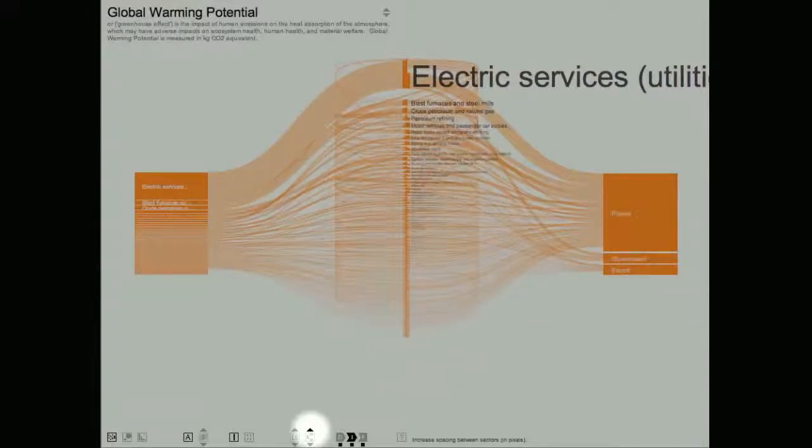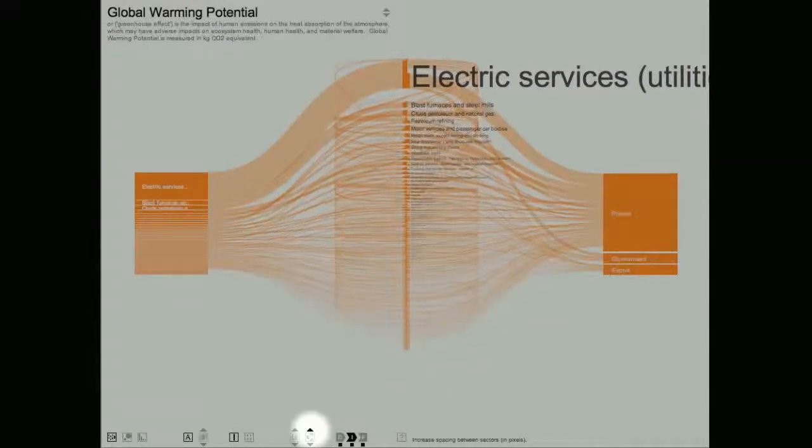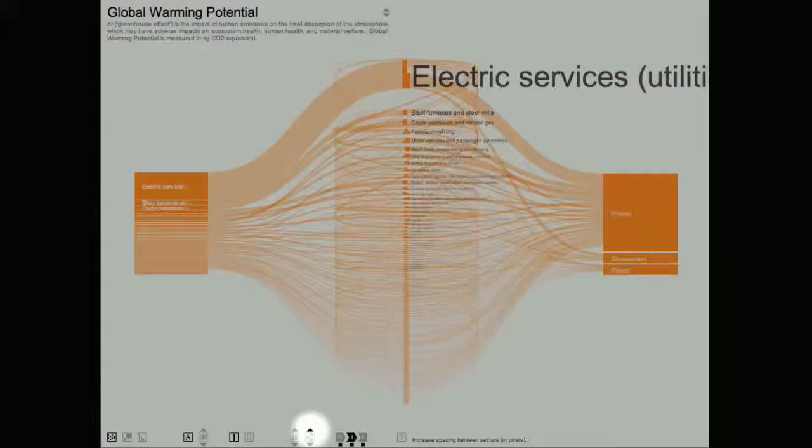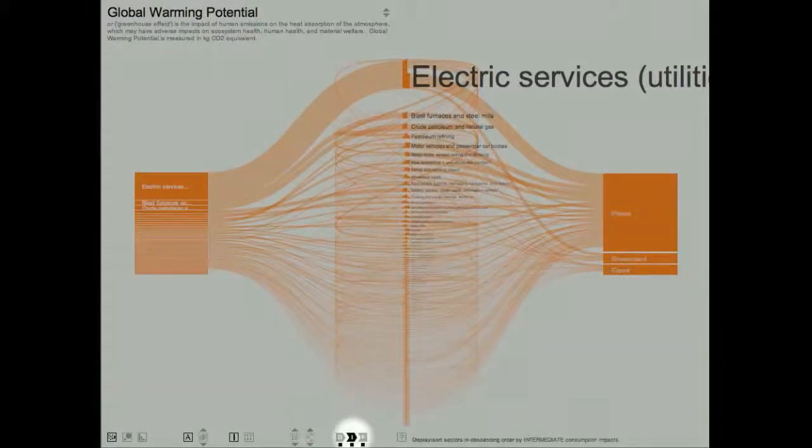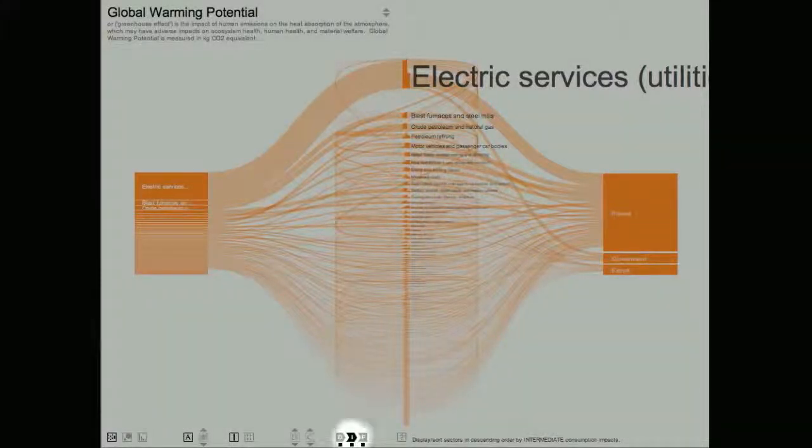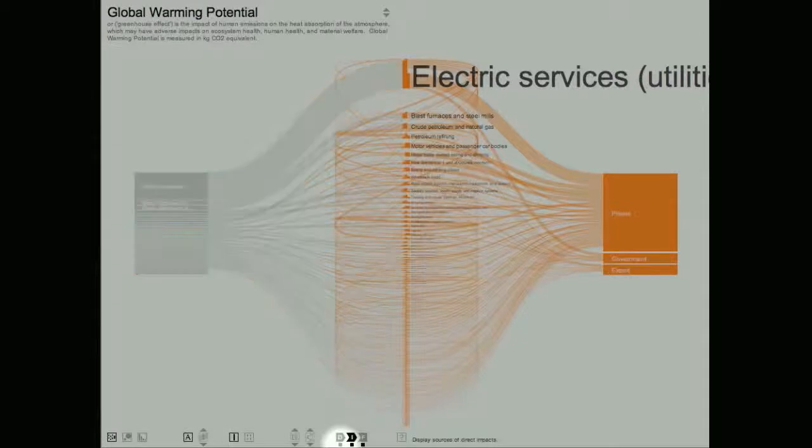I have already demonstrated that the three buttons labeled D, I, and F control whether the central stack of sectors is sorted by direct, intermediate, or final consumption impacts. The small black squares below each control whether or not the direct, intermediate, or final flows are highlighted. For example, I can turn off the direct impact flows by clicking on the box below the direct impacts button.